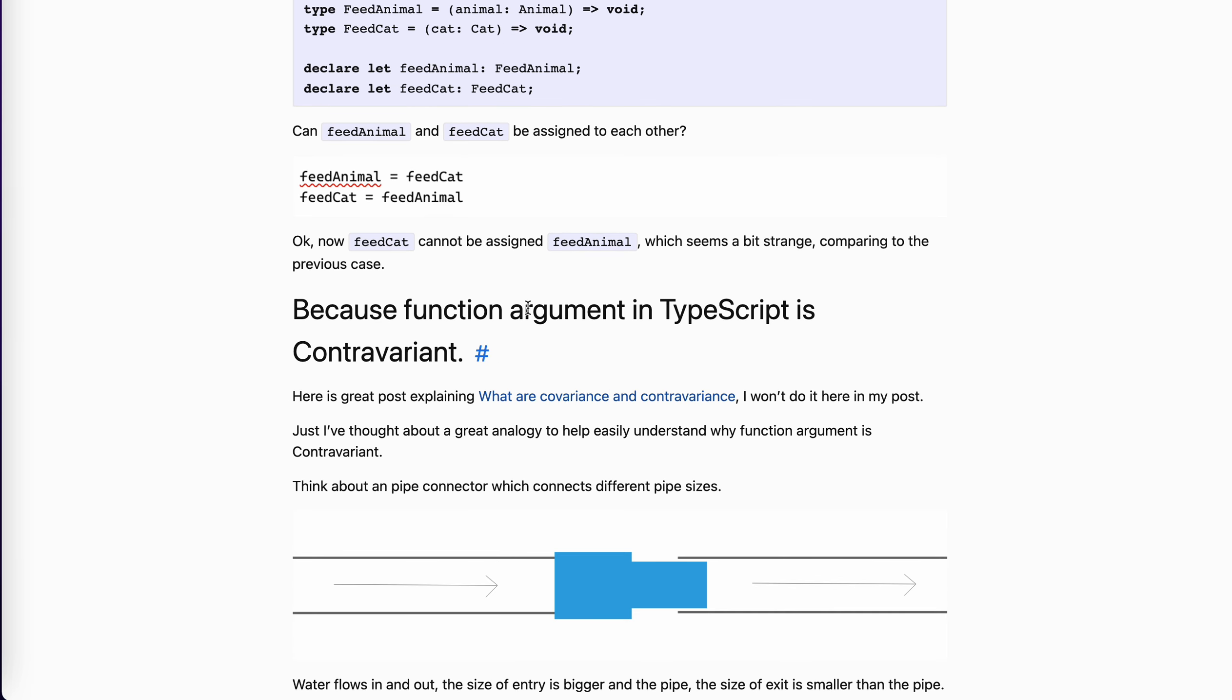So this is because the function arguments in TypeScript is contravariant. Actually, I think it's some version TypeScript added this. Before that, actually, the argument is invariant or covariant. I don't remember, but it's not strict. So maybe this, it's okay. But now it's not.